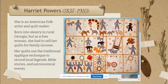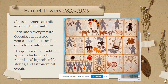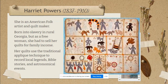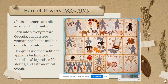So let's learn a little bit about Harriet Powers. She was born in 1837 and she died in 1910. She is an American folk artist and a quilt maker. She was actually born into slavery in rural Georgia, but as a free woman, she had to sell her quilts for family income. She didn't know how to read or write, so she told stories through her quilts.